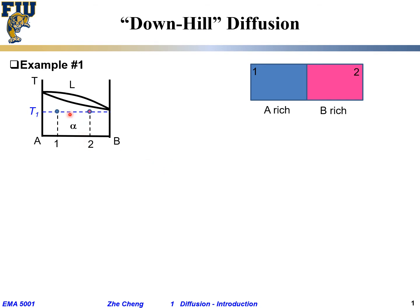Based on the phase diagram, eventually the system should become a single uniform phase, because we are in the single-phase region. Under equilibrium — the lowest energy condition — it should be a single phase, which means the two pieces come together into one piece.